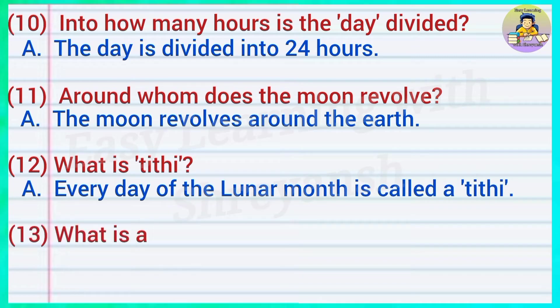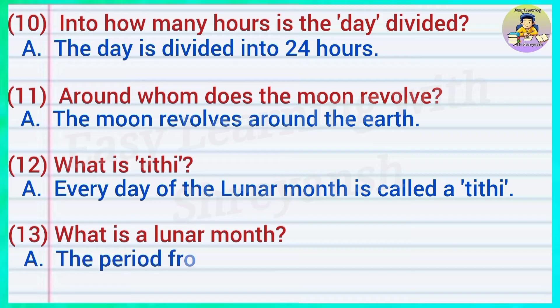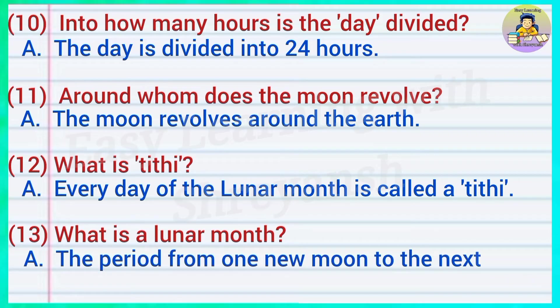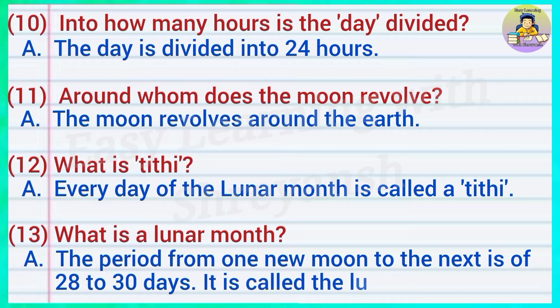Thirteen — what is a lunar month? Answer: The period from one new moon to the next is of twenty-eight to thirty days. It is called a lunar month.